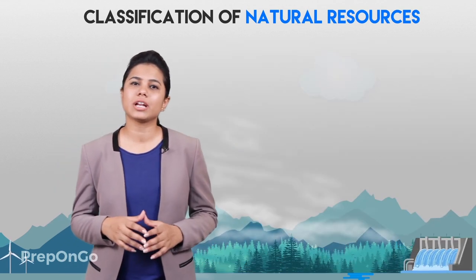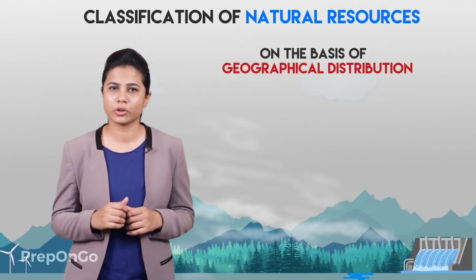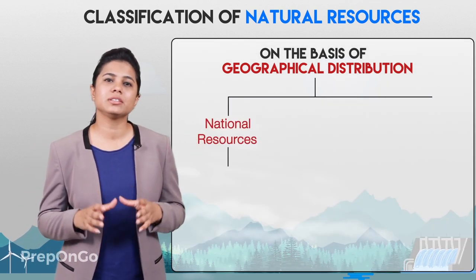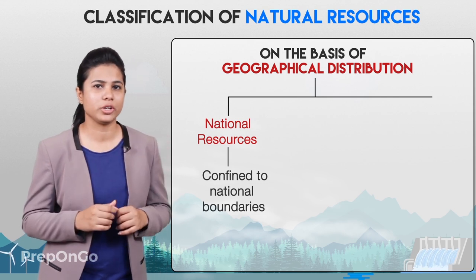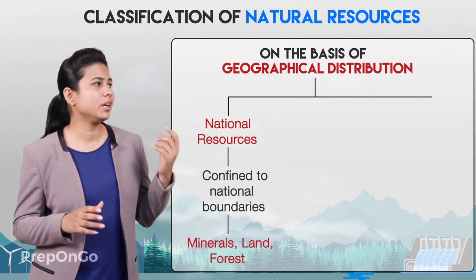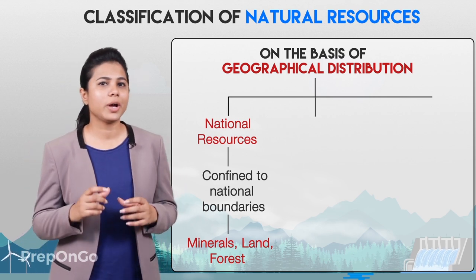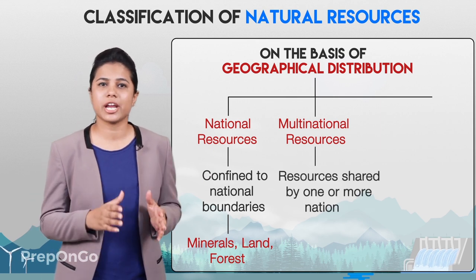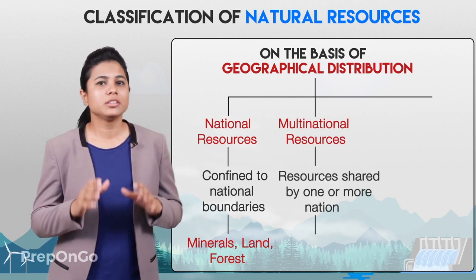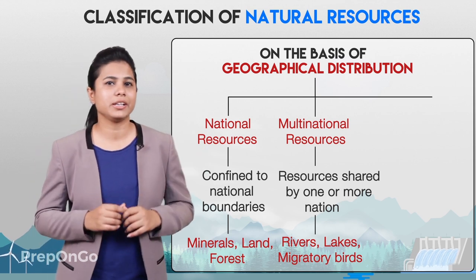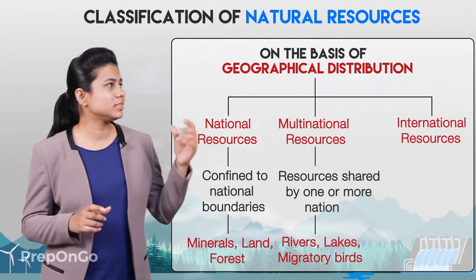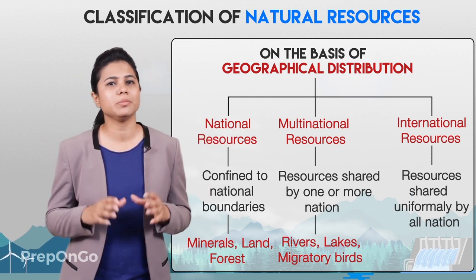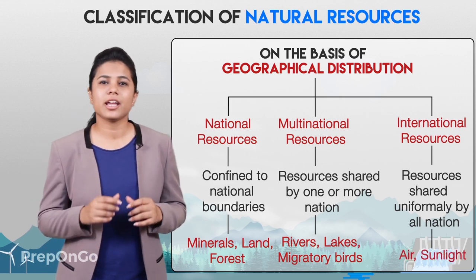We can also classify natural resources based on their geographical distribution. National resources are confined to national boundaries and include minerals, land, and forest. Multinational resources are shared by one or more nations and include rivers, lakes, and migratory birds. International resources are shared uniformly by all nations — for example, air and sunlight.